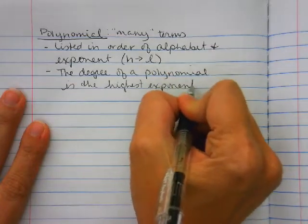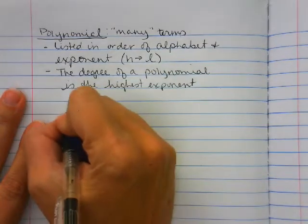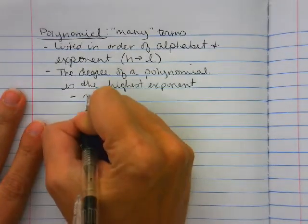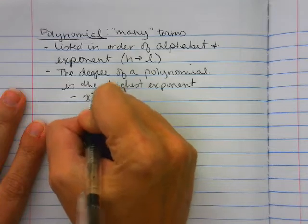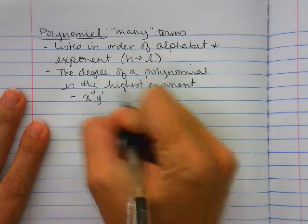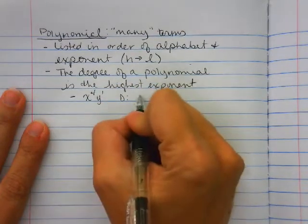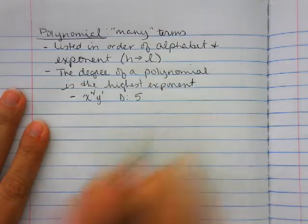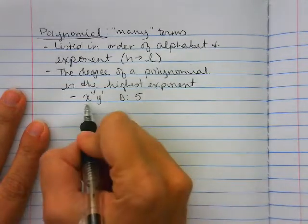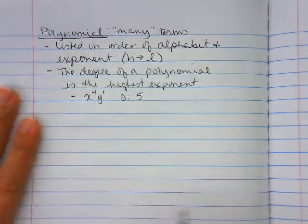If we have two exponents — for example, if I have x to the fourth times y, which is technically y to the one — then we would need to add them, and this would be a degree of five. But if we only had x to the fourth, it would be a four.